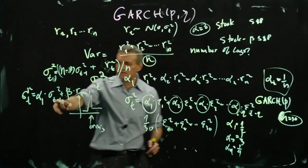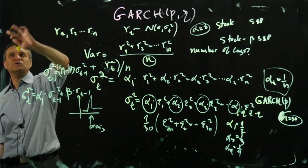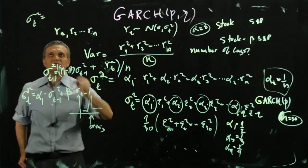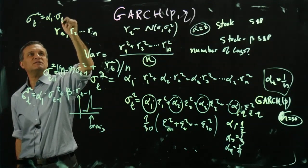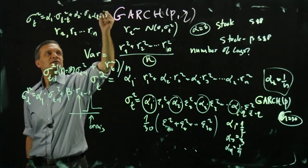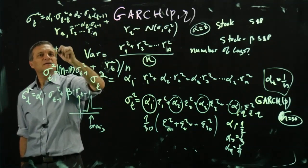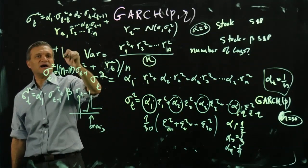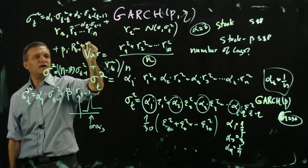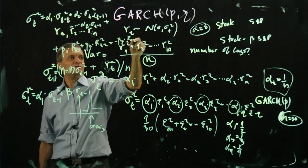Because you have both lagged squared returns and lagged variances, this is called GARCH(p,q). The general form is: σt² = α₁·σ²_{t-q} + α₂·σ²_{t-q-1} + ... + αq·σ²_{t-1} + β₁·r²_{t-1} + β₂·r²_{t-2} + ... + βq·r²_{t-q}. That's your full GARCH model.